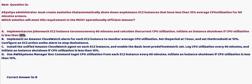Option B: Implement an Amazon CloudWatch alarm for each EC2 instance to monitor average CPU utilization. Set the period to one hour and set the threshold at 10 percent. Configure an EC2 action on the alarm to stop the instance.